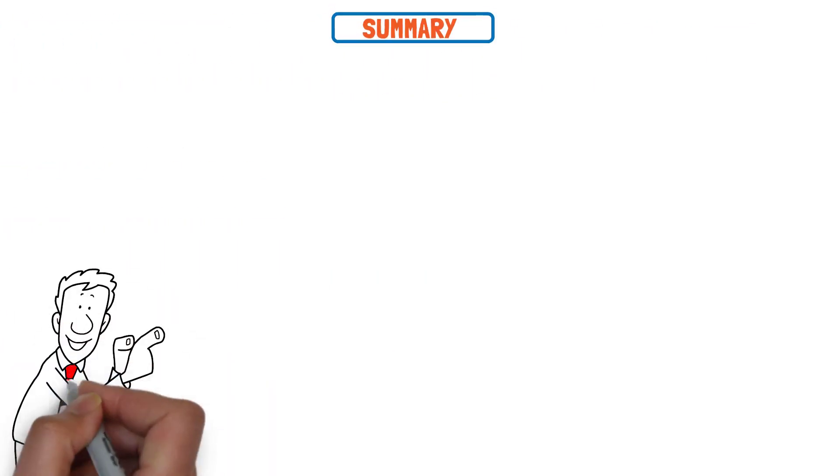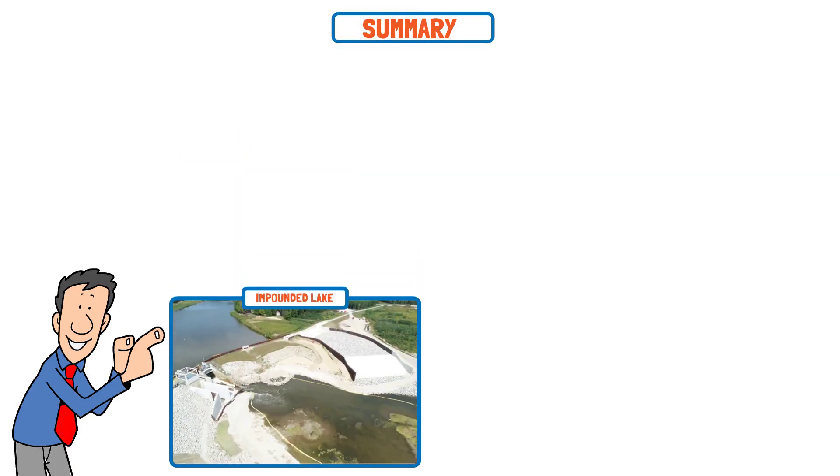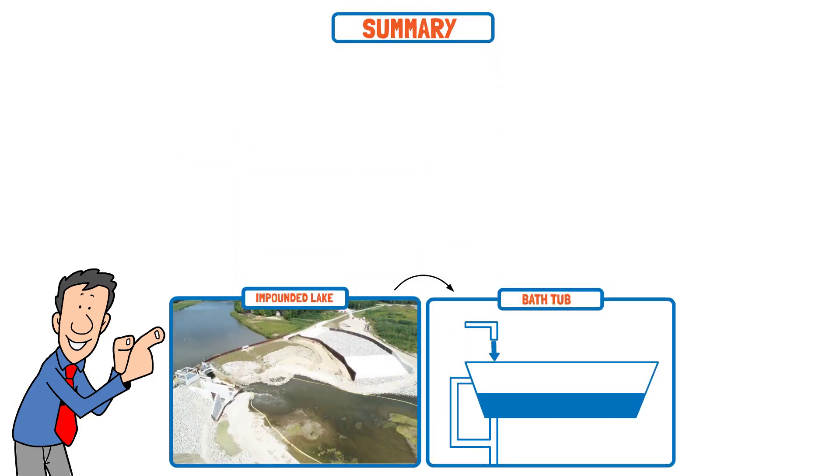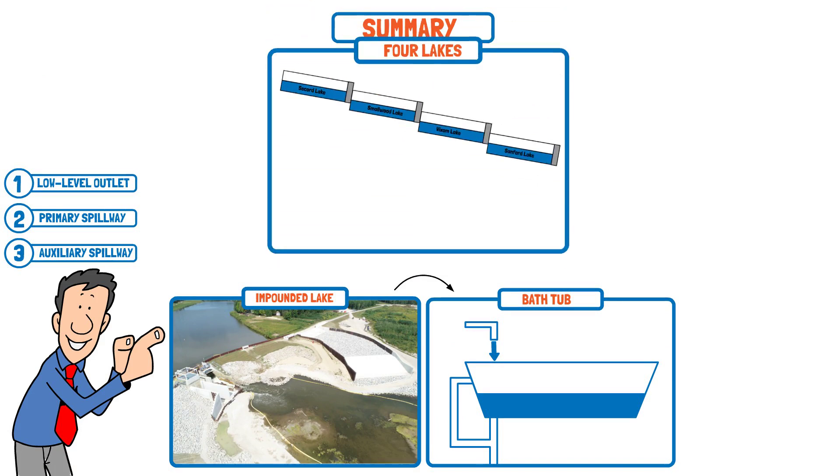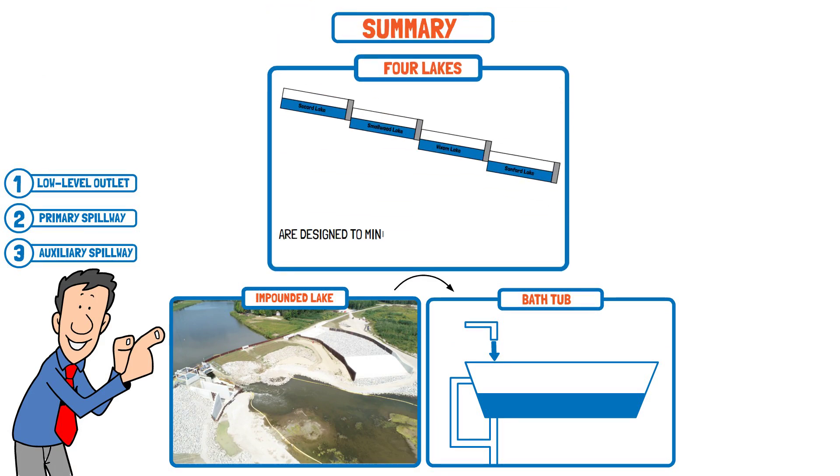In summary, an impounded lake operates similarly to a bathtub, leveraging three kinds of spillways to help maintain the lake level. The four lakes dams are designed to minimize increased risk of flooding, but do not control flooding. Thank you for watching.